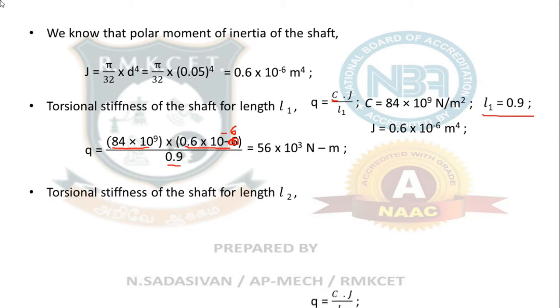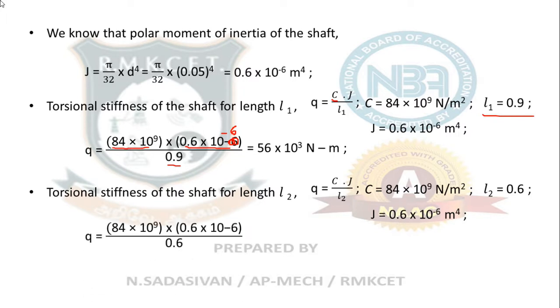Similarly, lower portion of the shaft for length L₂ you calculate. It is the same rigidity modulus, L₂ is 0.6, J is also same because the diameter is same.